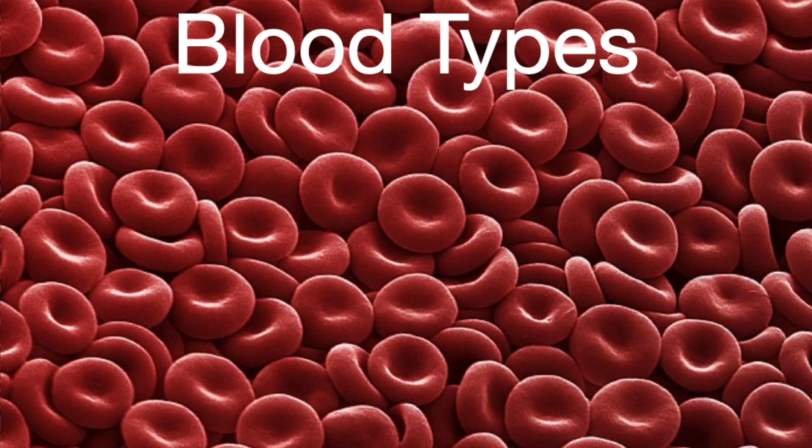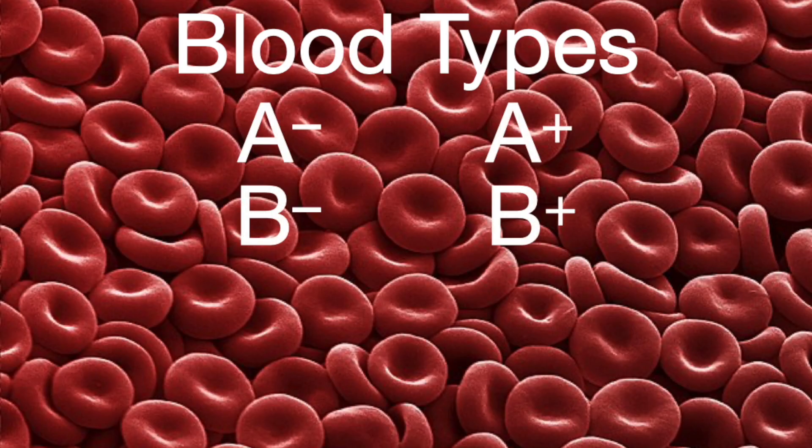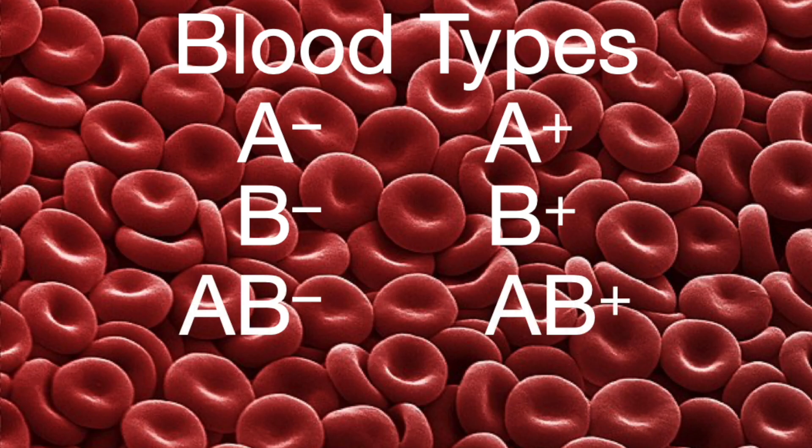Any one of the four blood types — A, B, AB, and O — can be positive or negative.